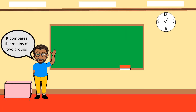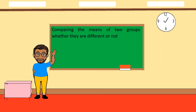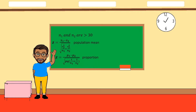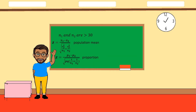For the two-sample case, it compares the means of two groups to determine whether they are different. When n₁ and n₂ — the sample sizes of the first and second groups — are both greater than 30, we use the Z-test for two-sample case, which includes formulas for both population mean and population proportion.